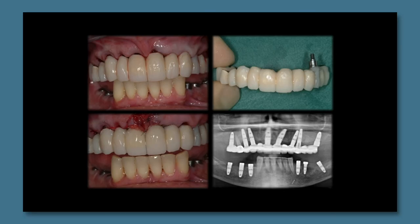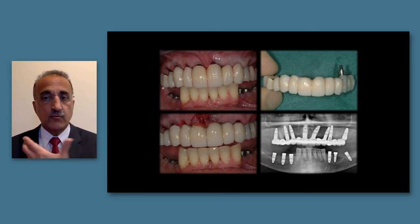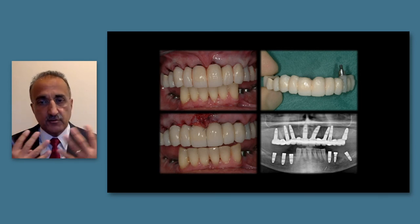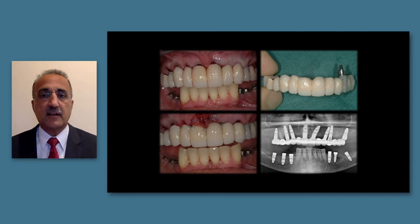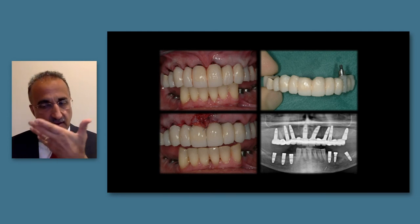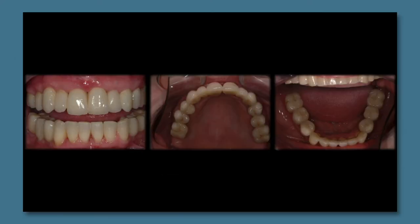At implant placement we use immediate provisionalization, utilizing one implant and a tooth for retention and resting the bridge with pontics on the healing abutments. Soft tissue grafting was also carried out - grafting the sockets with biomaterial in the gap and connective tissue on the facial surface to improve outcomes and reduce remodeling.